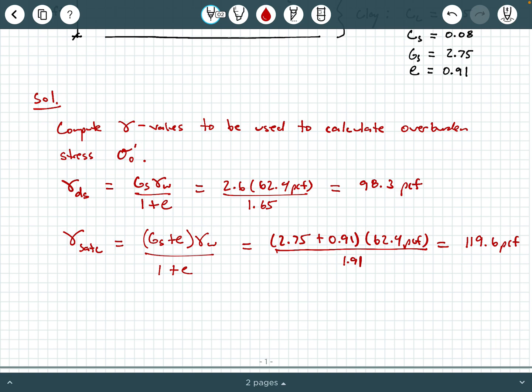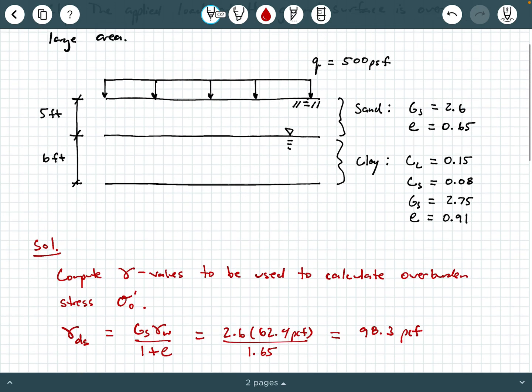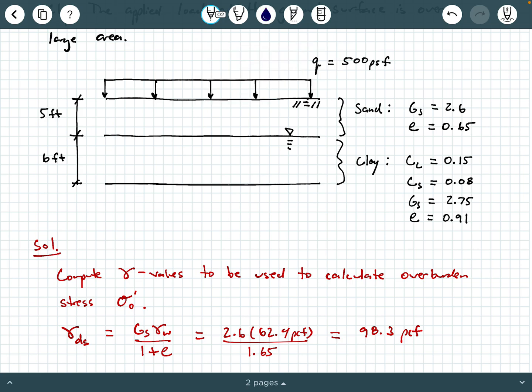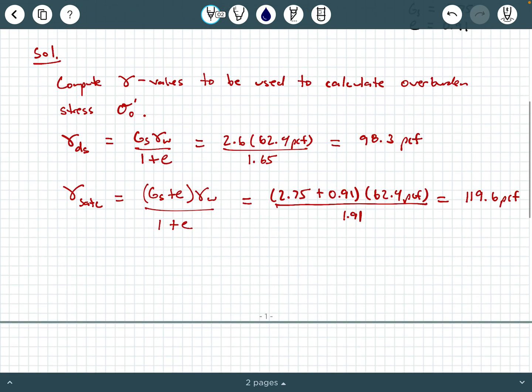Next, we're going to compute the overburden pressure. Now, you need to remember, when you're calculating the overburden pressure, we compute the overburden pressure at the midpoint of the layer that we are performing the consolidation test on or the consolidation analysis on. So we're going to make a note here. We're going to say compute sigma prime naught at midpoint of the clay layer.